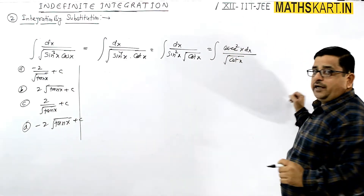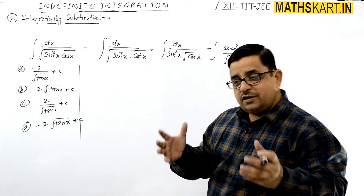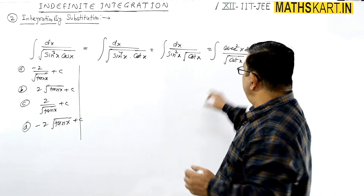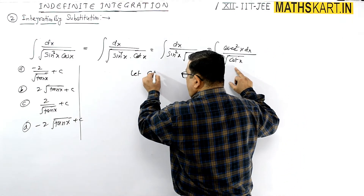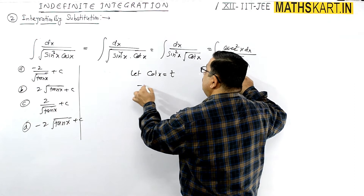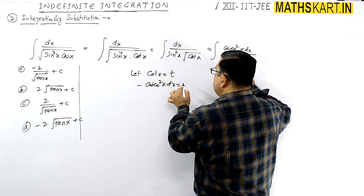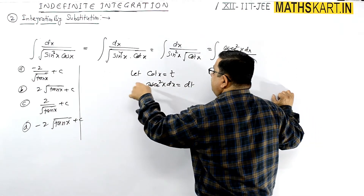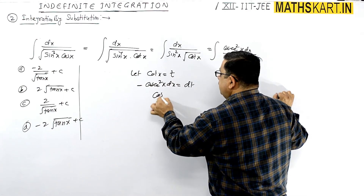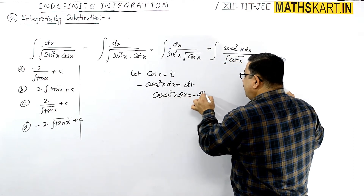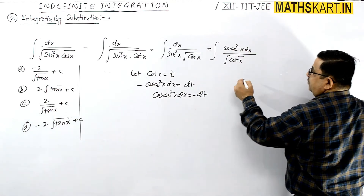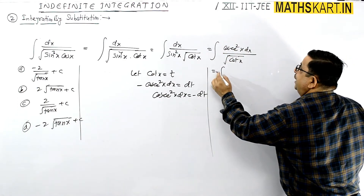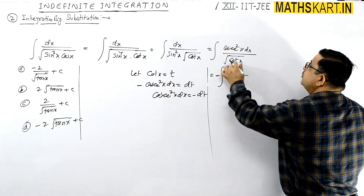This becomes cosec²x. We know the derivative of cot x is minus cosec²x. So just let cot x = t. Therefore minus cosec²x dx = dt. Since we don't have minus, shift it: cosec²x dx = minus dt. So the value becomes cosec²x dx = minus dt, giving minus dt upon root of t.